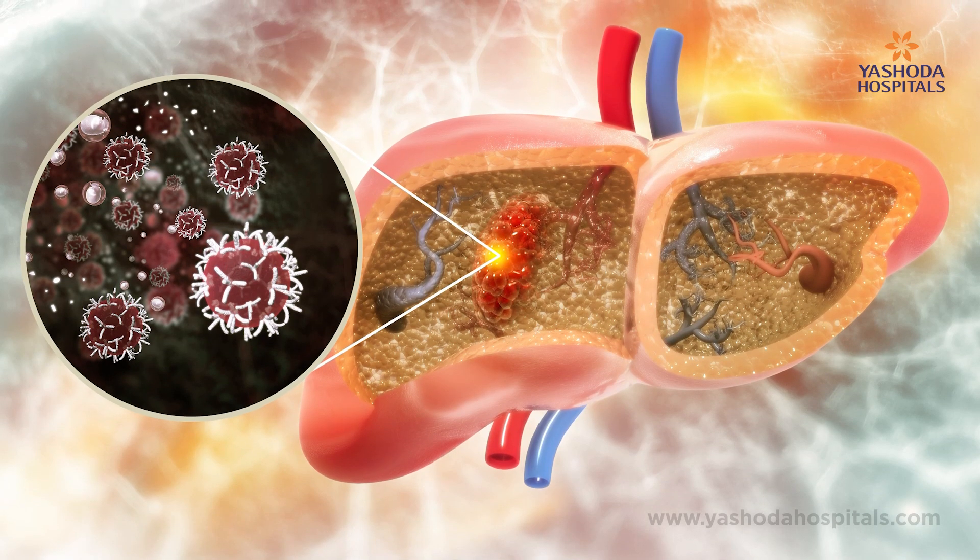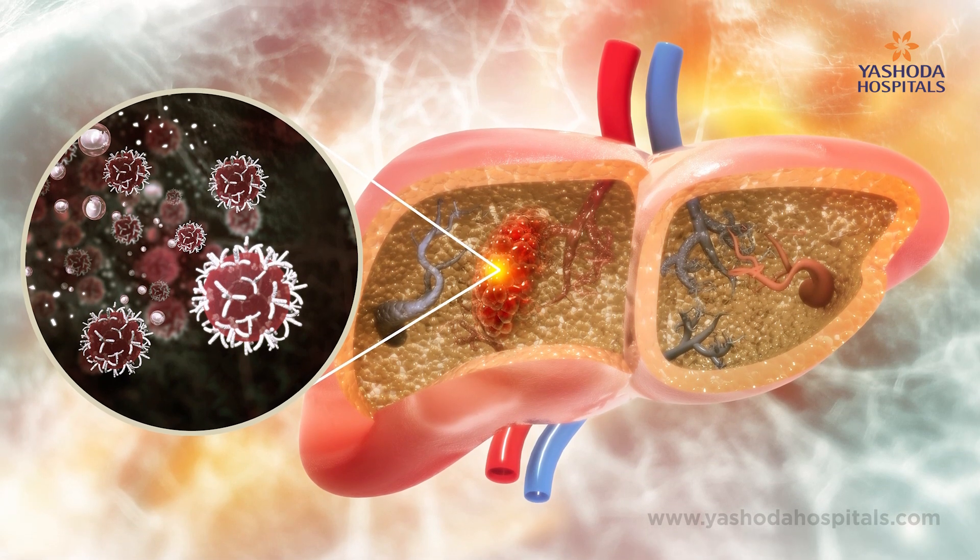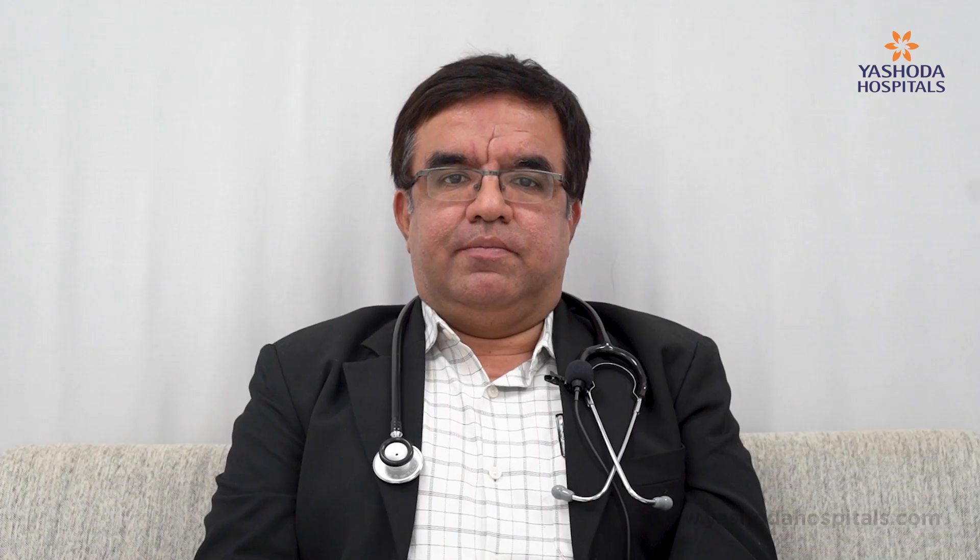Primary liver cancer is not as uncommon as it is thought of. When you look into the Globocon data, it is the 10th most common cancer in India. Approximately 35,000 new primary liver cancer cases are being diagnosed in India per year. More importantly, out of these 35,000, approximately 34,000 die within one year. These are bad numbers and this is because of the late stages at which this cancer is diagnosed.